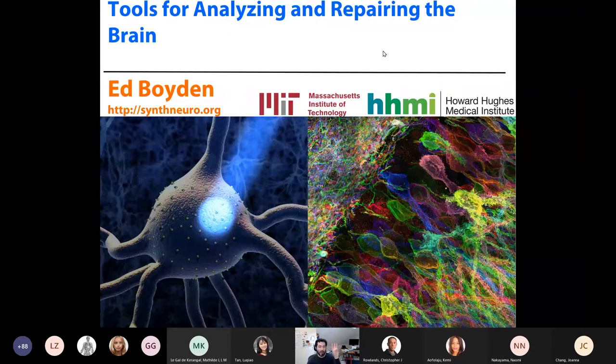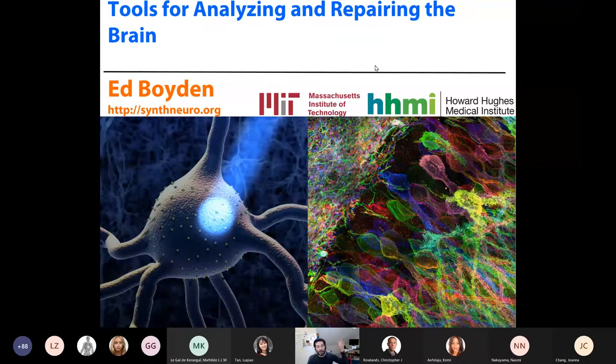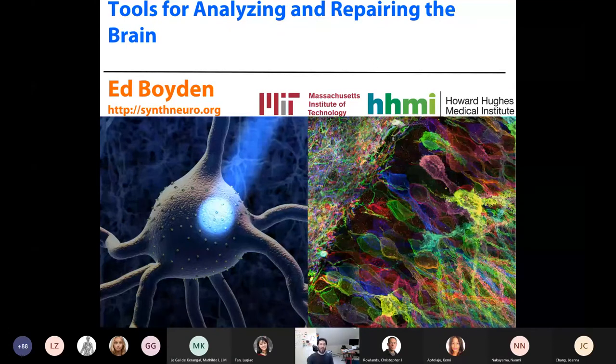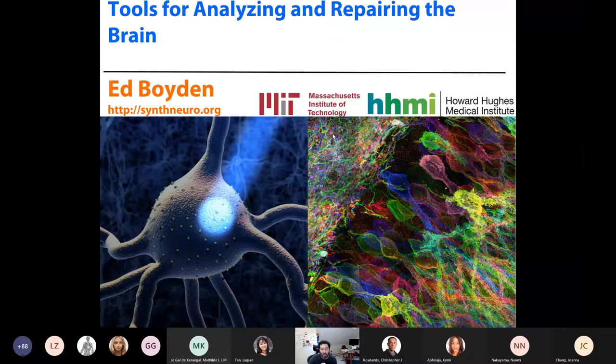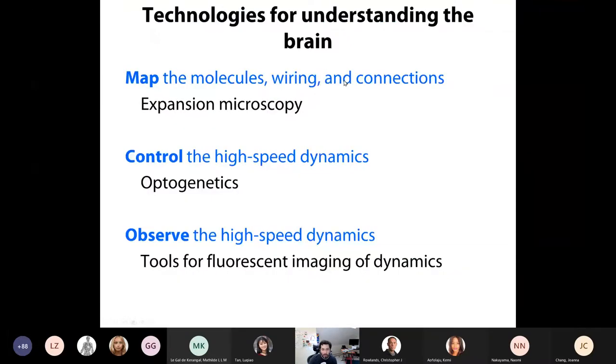So only half-jokingly, I sometimes say that our job is to conquer space and time. We need to find ways to look at and control biological systems, such as the brain, but not limited to the brain, across these different spatial scales and across these different temporal scales. So today, I'll tell you three stories about technologies that we've been developing, one about space and two about time.